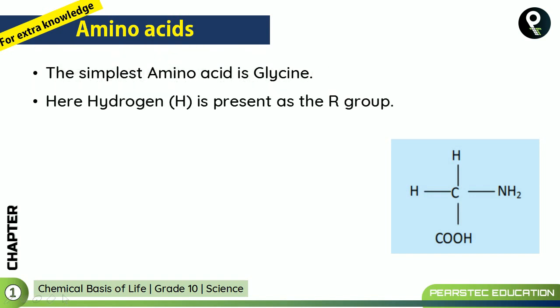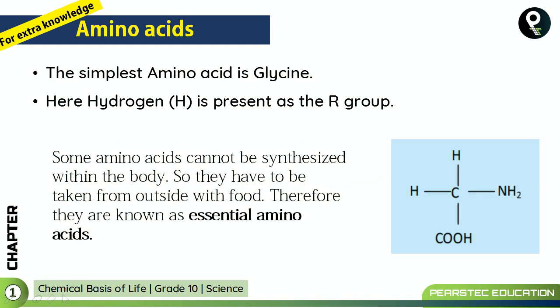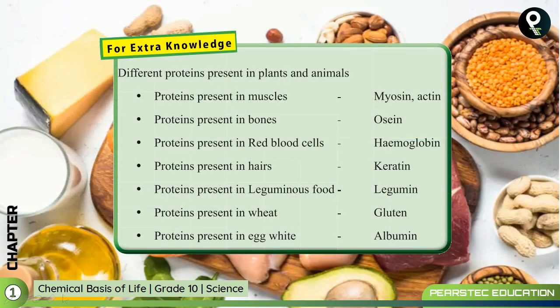The simplest amino acid is glycine, where hydrogen is present as the R group. Some amino acids cannot be synthesized within the body, so they have to be taken from outside with food. Therefore, they are known as essential amino acids.